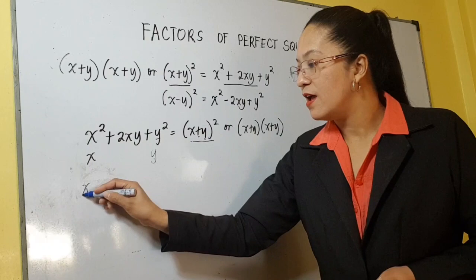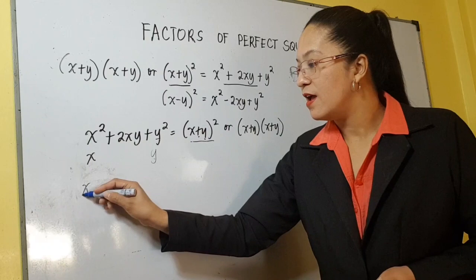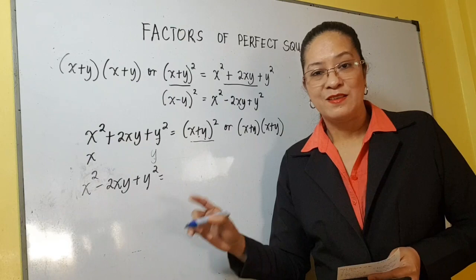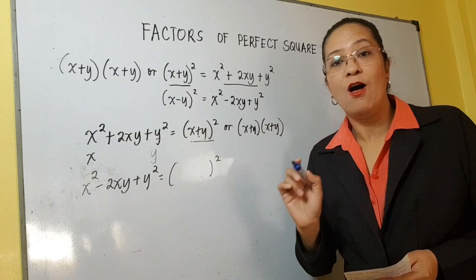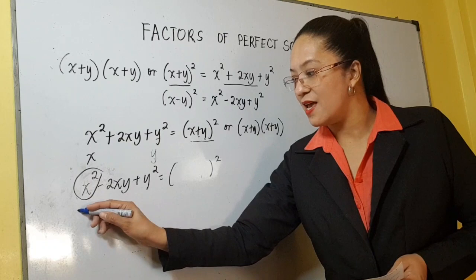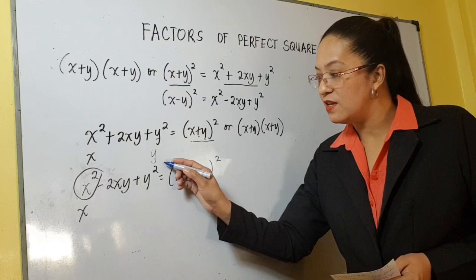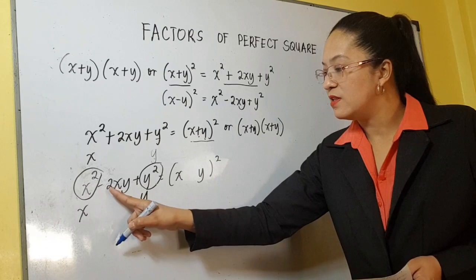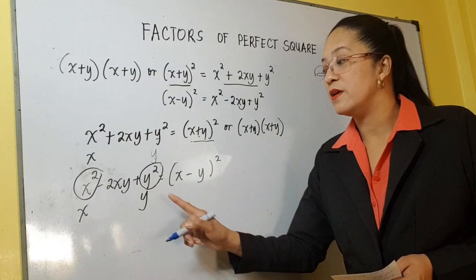Now, what about if we have x squared minus 2xy plus y squared? Ito po ay isang perfect square trinomial. So therefore, ang factors niya po ay square of a binomial — kung saan yung first term ay square root lang ng first term natin dito. So the square root of our first term here is x. And then the second term is just the square root of the last term in the trinomial. So the square root of y squared is y. Now, the sign here should be the same with the sign of the second term in the trinomial.